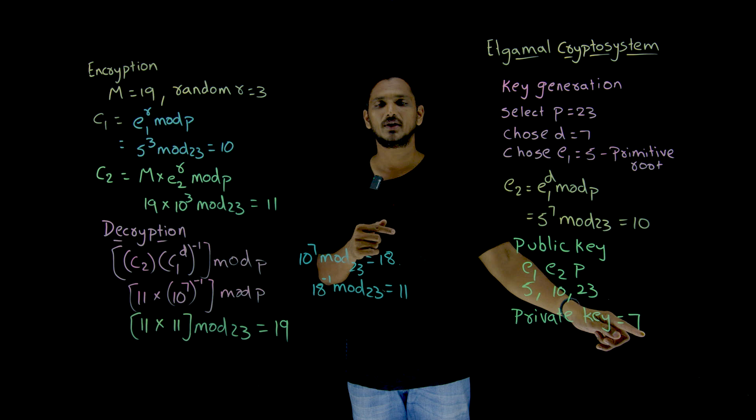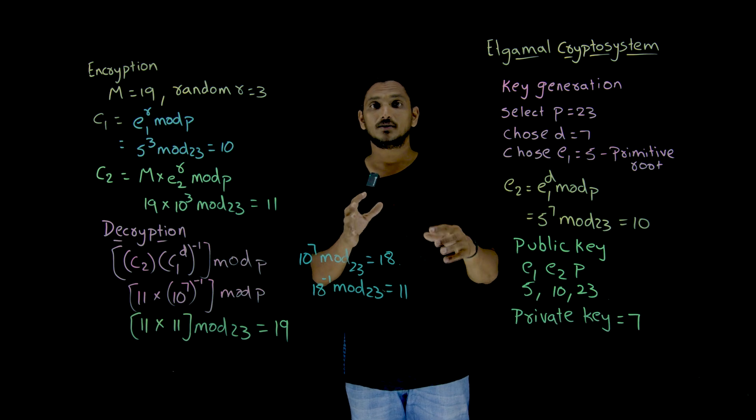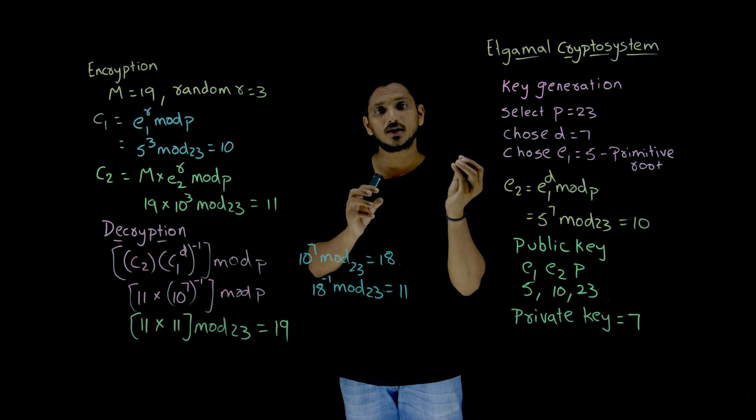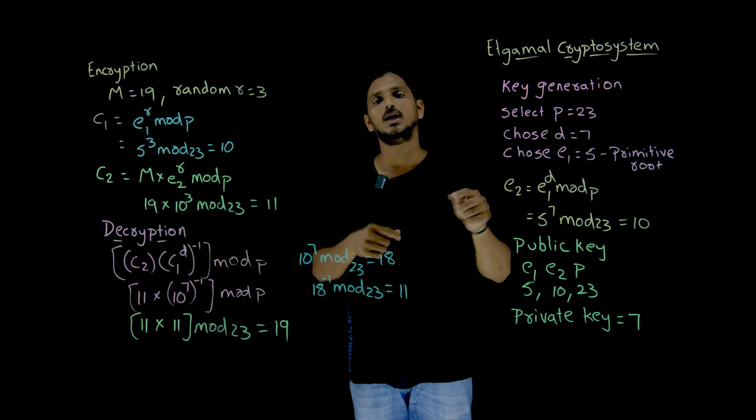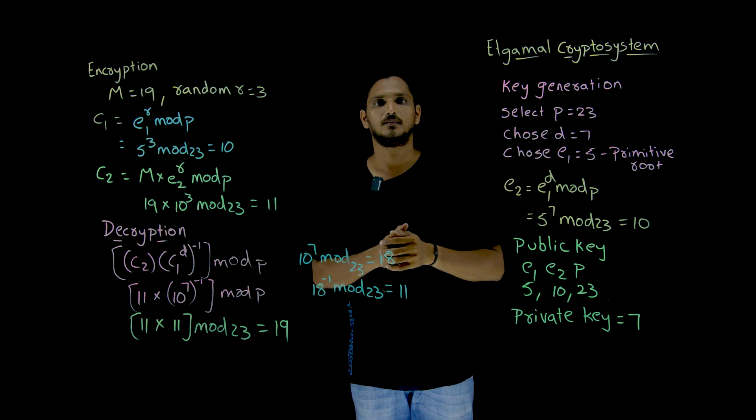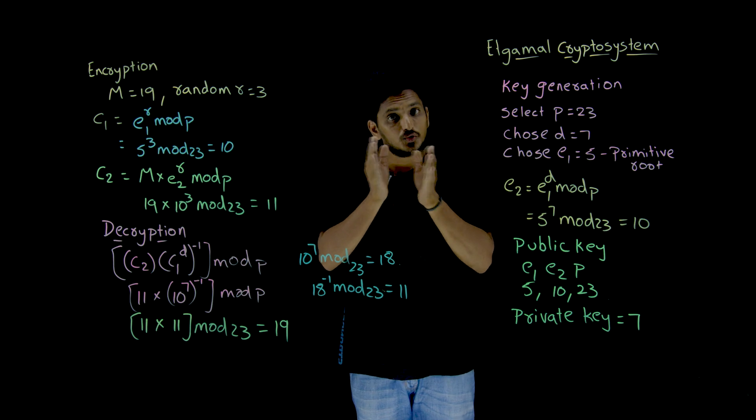Private key is 7. We are sending E1, we are sending E2 to the sender. Means indirectly, this private key is involved in E2. He is going to use that.